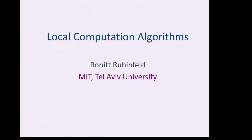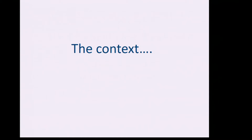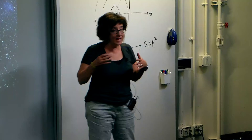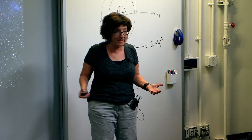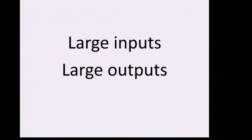I want to talk about a model of local computation algorithms and give a sense of the types of results we got within this model. The context is: you have huge data, you don't have time to read all the data, but you need to somehow compute some parameter of it. And not only is your input extremely large, but your output might be extremely large too.